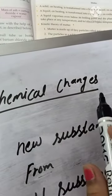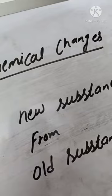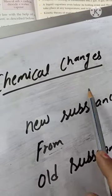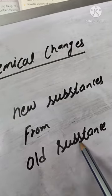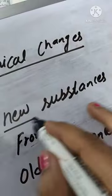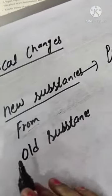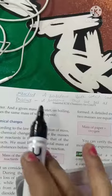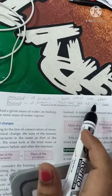Next we will study the law of conservation of mass in chemical changes. In chemical changes, a new substance is formed and the change cannot be reversed by reversing the conditions. In a chemical change, we get new substances from old substances. The new substances formed are called products, and the old substances are called reactants. A substance with which we start is called a reactant, and the substance we get at the end is called a product.